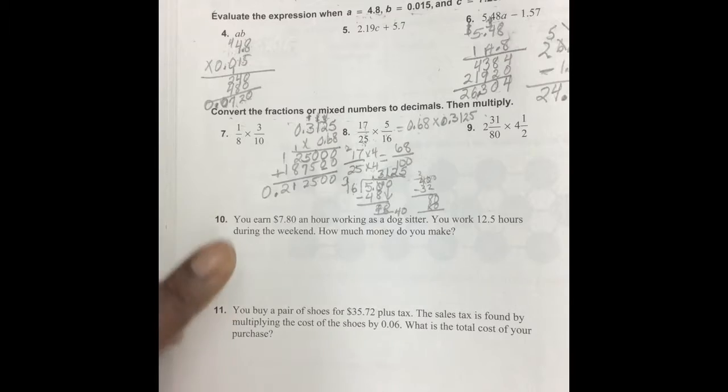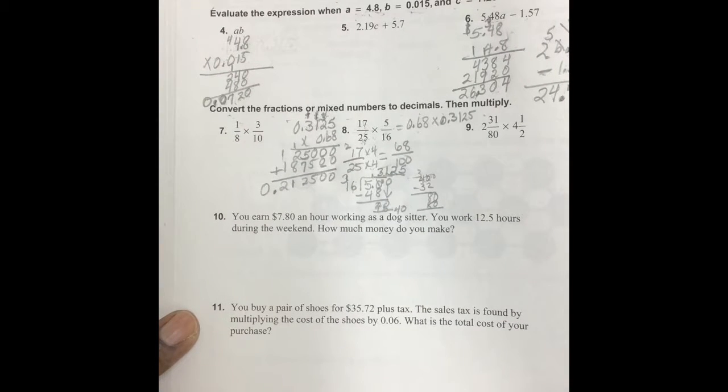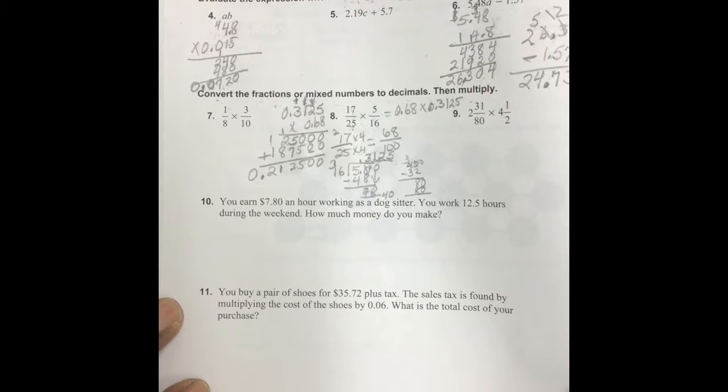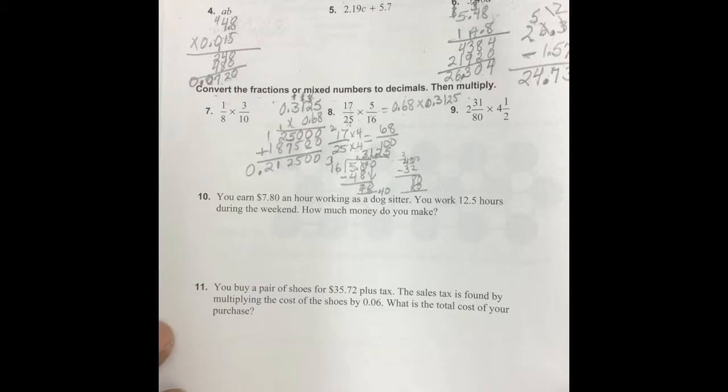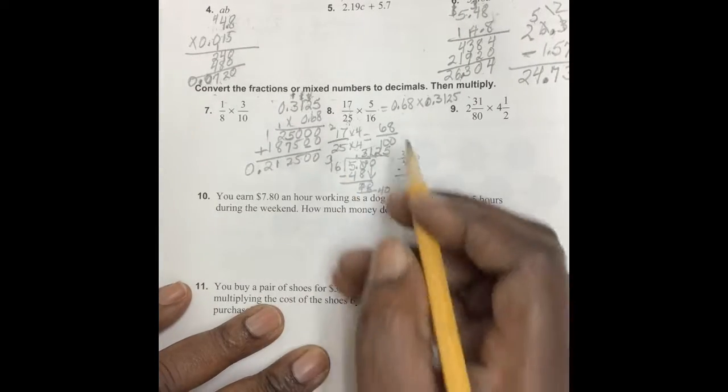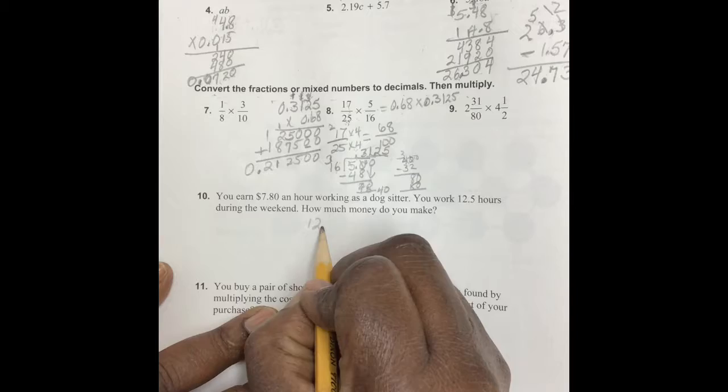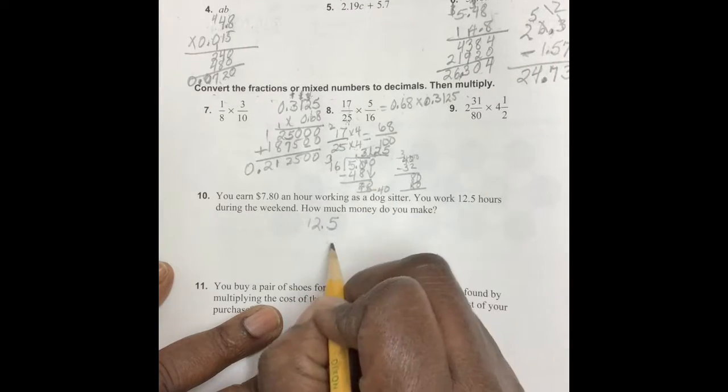Let's move on to number 10. You earn $7.80 an hour working as a dog sitter. You work 12.5 hours during the week. How much money do you make? So if you work 12.5 hours and you work at $7.80 an hour, you multiply.